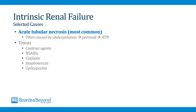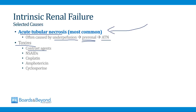There are many causes of intrinsic renal failure, but the most common is acute tubular necrosis, which has many causes including ischemia and toxins. Importantly, acute tubular necrosis can occur due to underperfusion — which initially causes pre-renal failure — and then as it becomes more severe, kidney cells begin to die and the pre-renal failure converts to ATN, which is a form of intrinsic renal failure. Other common causes of intrinsic renal failure are toxins. In the hospital, you will commonly see intrinsic renal failure from radiocontrast dyes used in CT scans.